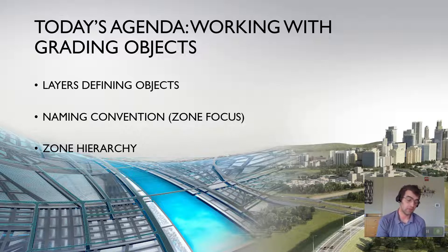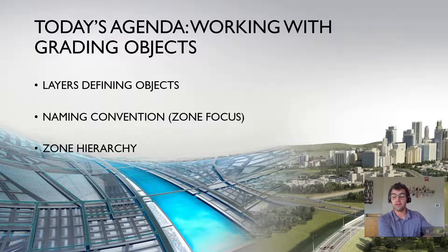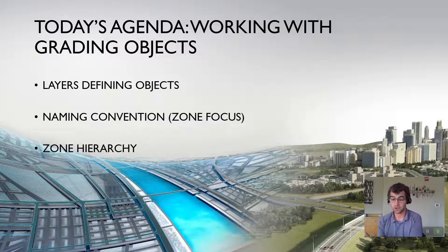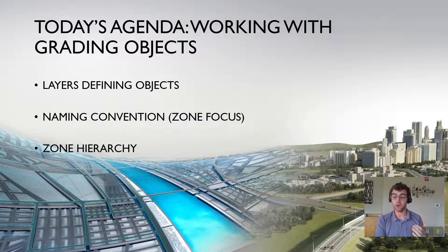Second thing: naming convention. It sounds pretty simple, but give it a name that's unique to that specific object. One thing you'll see is that in grading optimization, things get combined into a zone — a parking lot and a sidewalk are different grading objects in Civil 3D, but in grading optimization that's considered a zone, and there's a hierarchy involved. That takes me to my third point: understanding that hierarchy — what object's what, which one's on top, and which is the most important. Is your sidewalk more important than your parking lot, or vice versa? Make sure you know what's what so you can establish that early on and avoid backtracking.